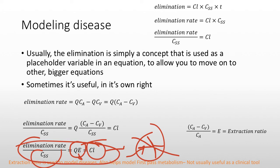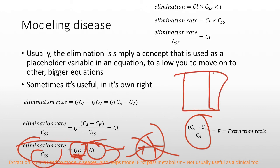Clearance equals blood flow times extraction ratio. For example, if one liter goes into the kidney and 20% is filtered — extraction ratio of 20% — then 1 liter × 20% = 200 milliliters cleared in that time period. That is GFR in this model. I hope you now understand concentration steady state and renal clearance. Next, we'll look at hepatic clearance.